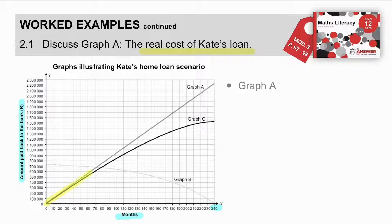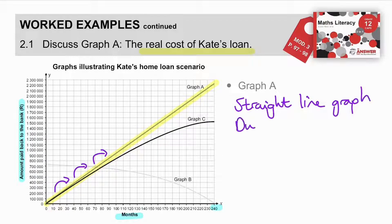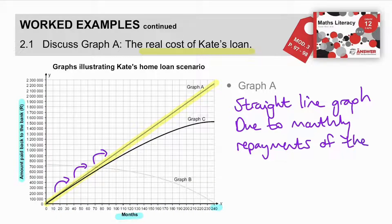That's right. Why? Because, her monthly repayments are the same every month. So, she's increasing at a constant rate. So, if we have to describe graph A, we can say it is a straight line graph. And, it is due to the monthly repayments of the same value.